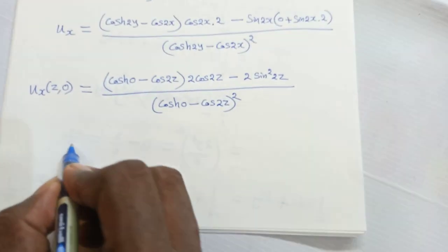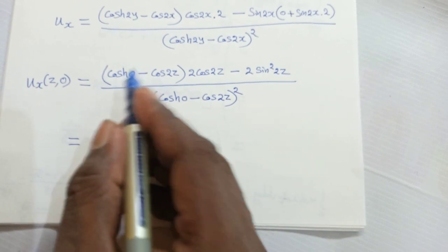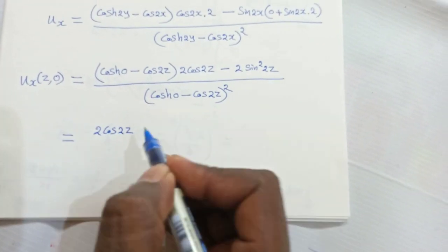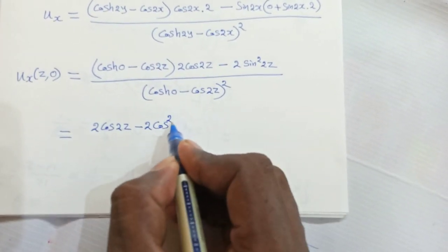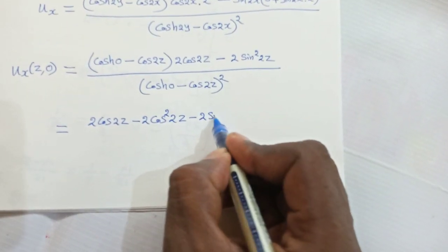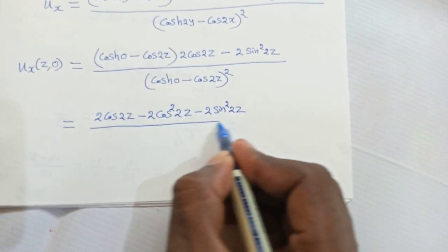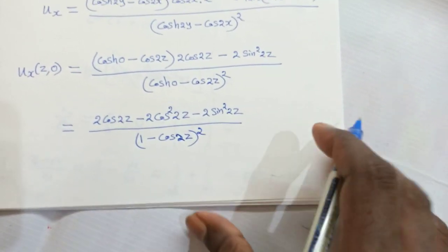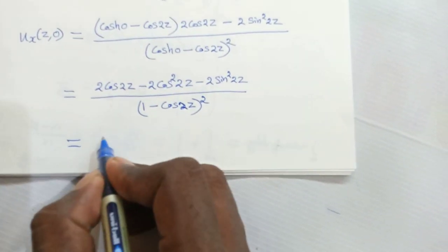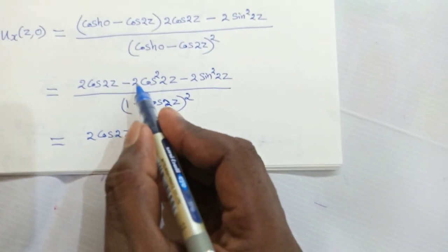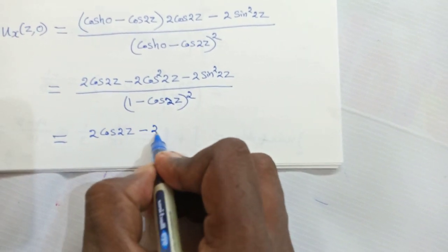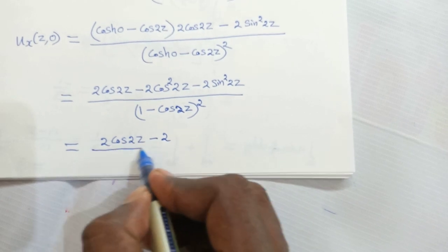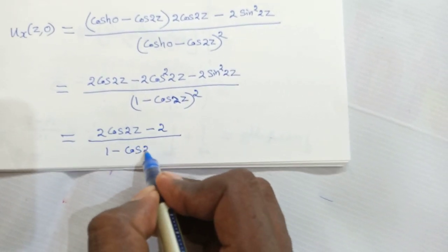Simplifying the numerator: taking -2 outside from the last two terms gives -2(cos²2z + sin²2z) = -2(1) = -2. So the numerator becomes 2cos2z - 2, all divided by (1 - cos2z)². Taking -2 outside the numerator gives -2(1 - cos2z), divided by (1 - cos2z)².